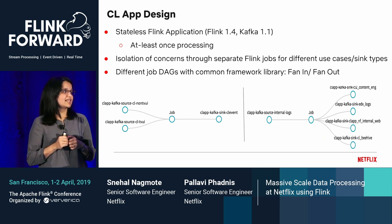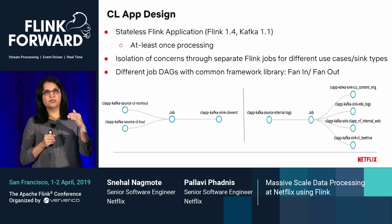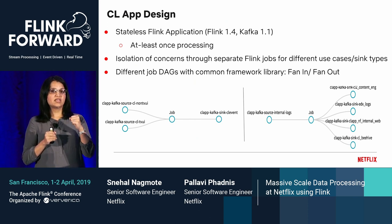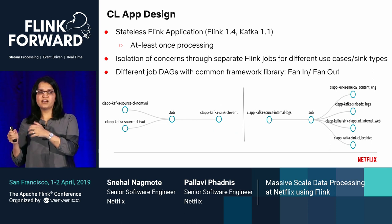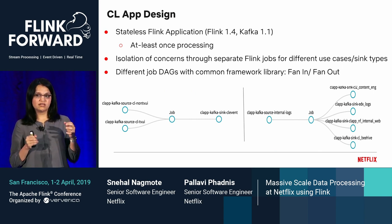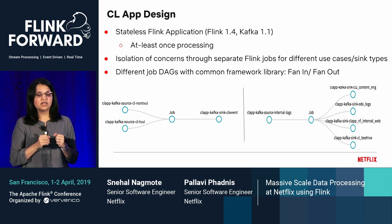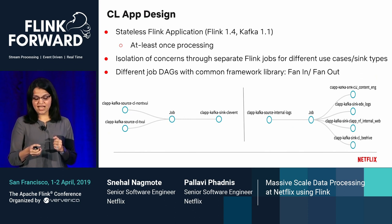For the use case of Netflix app user behavior data, the job DAG is fan-in, where we have multiple input Kafka topics where events are segregated based on platform, but the job writes to a single sink with a unified output schema. On the other hand, for the use case of internal tool logs, it's a fan-out where there is a single input source topic because the scale of the data is small, but the job routes events to a specific data sink corresponding to a specific internal tool.